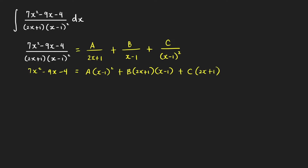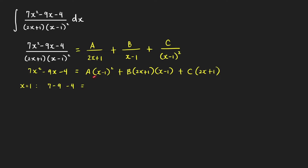Another way to find equations involving a, b, and c is to plug in strategic values of x that make one of the expressions equal to 0. If we plug in x equals 1 to make (x minus 1) equal to 0, we get 7 minus 9 minus 4 equal to C times (2 times 1 plus 1). This gives us negative 6 equal to 3c, so c equals negative 2.